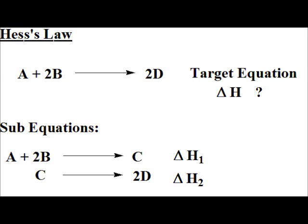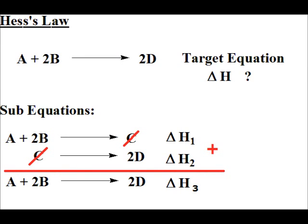I also know that C will decompose into 2 moles of D, and that reaction has a delta H we'll call delta H2. I can align these two equations together — similar to how spectator ions cancel in net ionic equations — C is on the right of the first reaction and on the left of the second reaction, so there is no C in the net reaction. What we end up with is A plus 2B goes to 2D, and delta H1 plus delta H2 gives me the delta H of the overall reaction, which we can call delta H3.